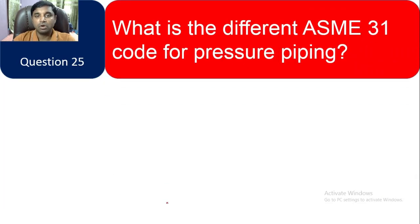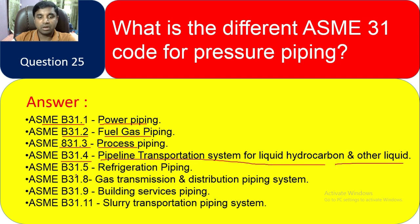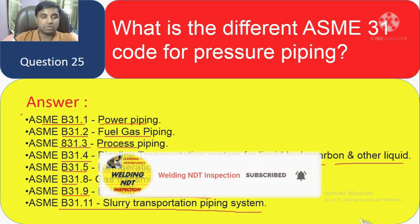Question 25: What are the different ASME B31 codes for pressure piping? ASME B31.1 — Power Piping; B31.2 — Fuel Gas Piping; B31.3 — Process Piping; B31.4 — Pipeline Transportation Systems for Liquid Hydrocarbons and Other Liquids; B31.5 — Refrigeration Piping; B31.8 — Gas Transportation and Distribution Piping Systems; B31.9 — Building Services Piping; B31.11 — Slurry Transportation Piping Systems.